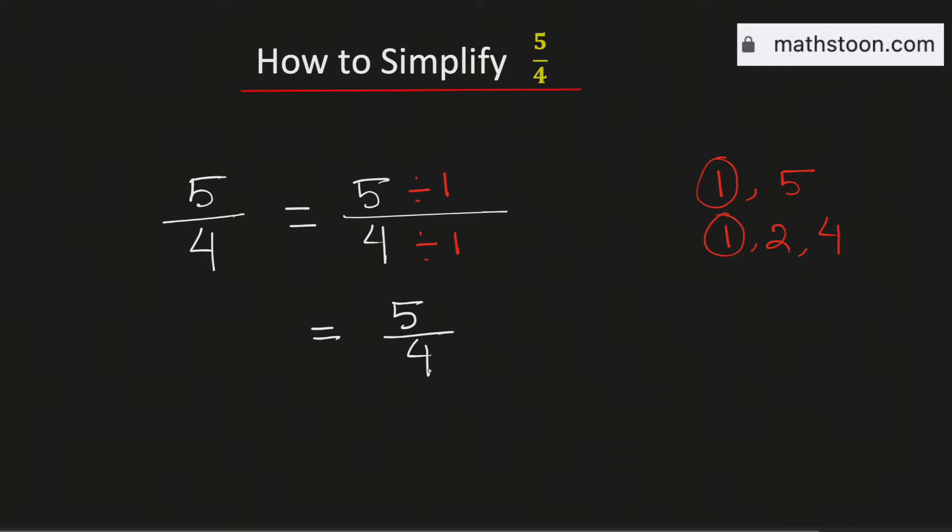That means 5 over 4 is already in simplified form. Now as the numerator is bigger than the denominator it is an improper fraction.